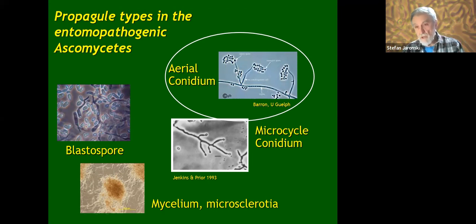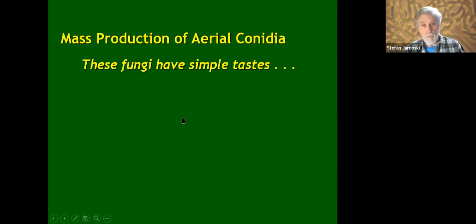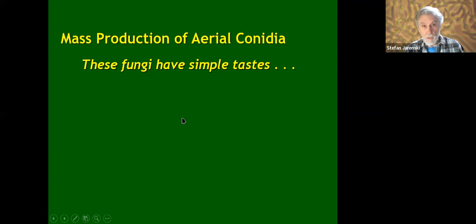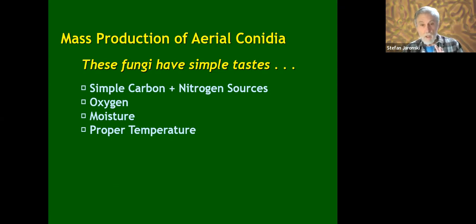Getting back to it: the conidium is the one — it's the natural infectious stage and can be easily produced on solid substrate. That's why when you look at all the products out there, they're almost all produced on solid substrate. So we're going to talk about production of aerial conidia. These fungi have simple needs: simple carbon and nitrogen source, oxygen, moisture, proper temperature. They're not fastidious — you can grow them on really any cereal grain or on an inert substrate impregnated with liquid medium.